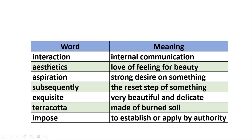Let's see these word meanings. 'Interaction' — internal communication. 'Aesthetics' — love of or feeling for beauty. 'Aspiration' — strong desire for something. 'Subsequently' — the next step of something. You can see very beautiful and delicate terracotta — made of burnt soil. 'Impose' — to establish or apply by authority.